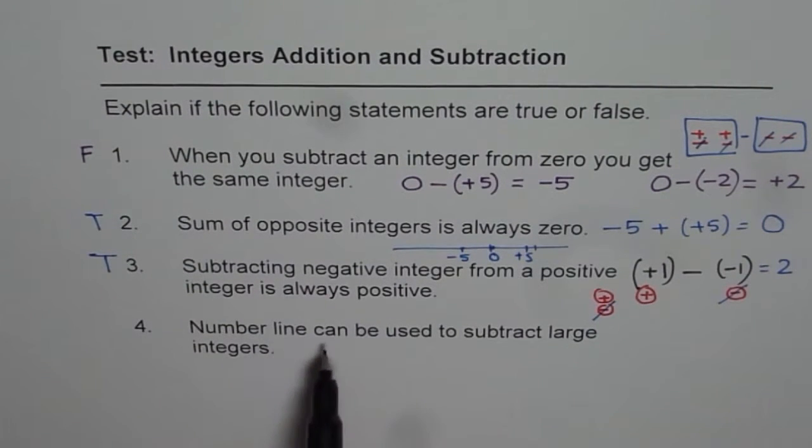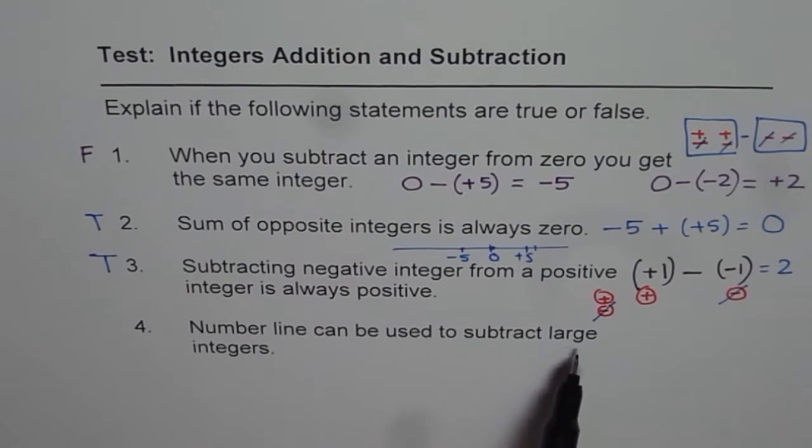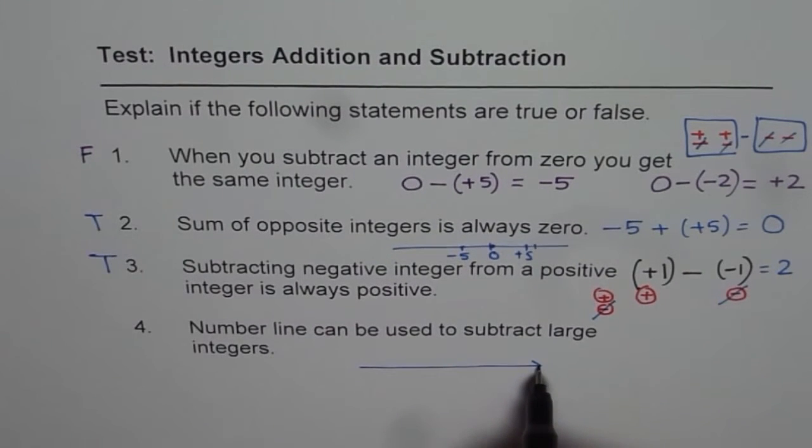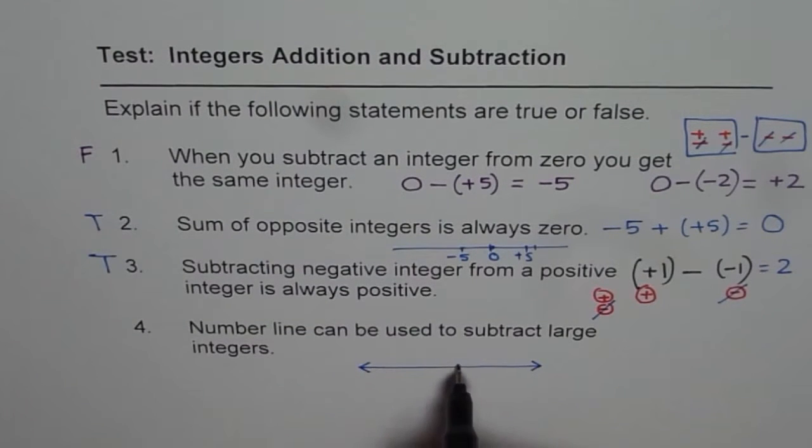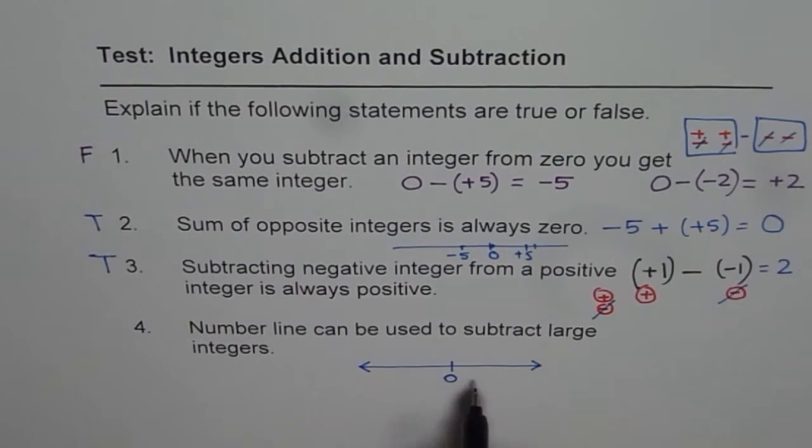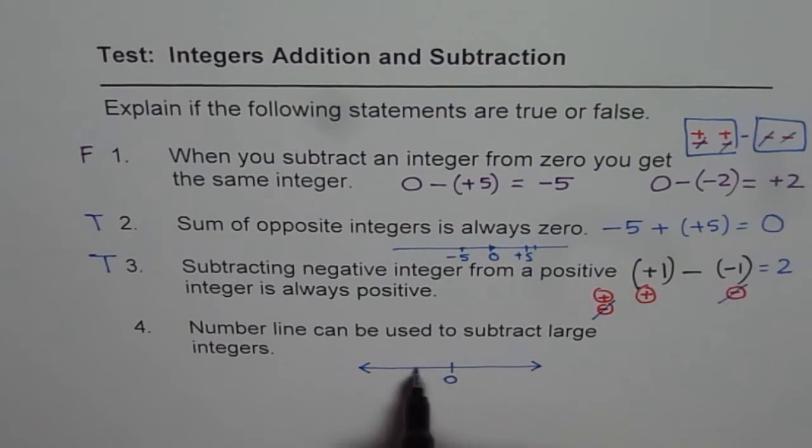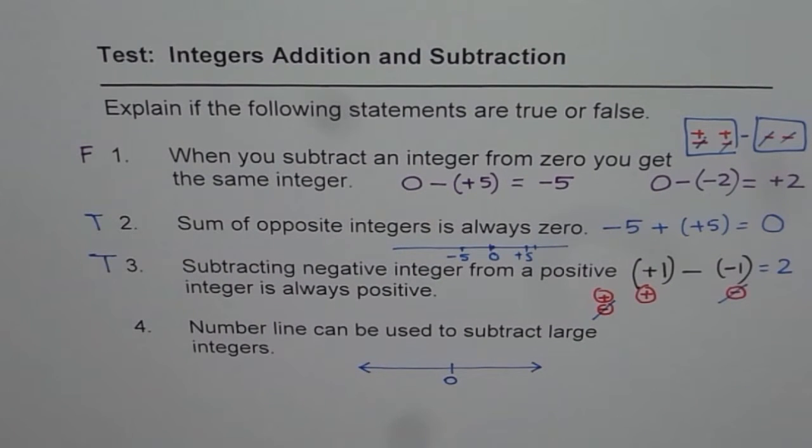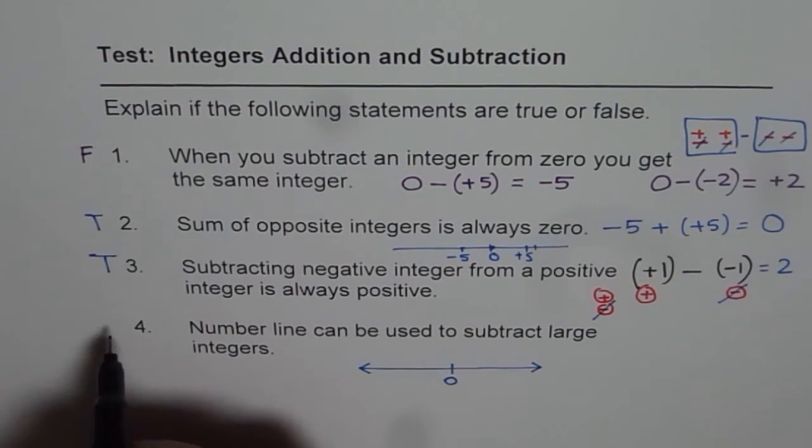Last one is, number line can be used to subtract large numbers. Well, number line can be used to subtract any number. And the reason is, it extends to very large numbers. That is, infinitely large. You see, 0 right there. And in both the directions, a number line extends to infinity. Infinity is a very, very large number, which can never be reached also. So, number line can be used to subtract large numbers. And that is true.